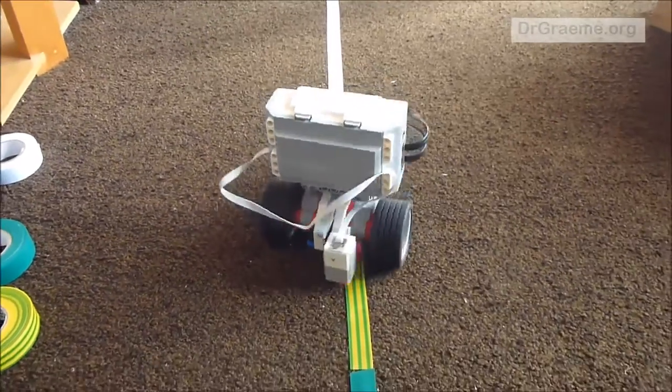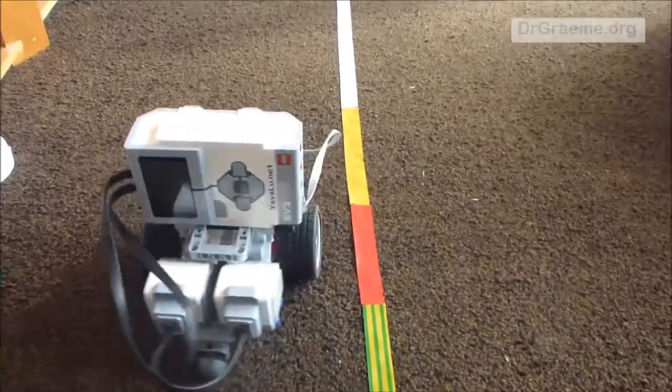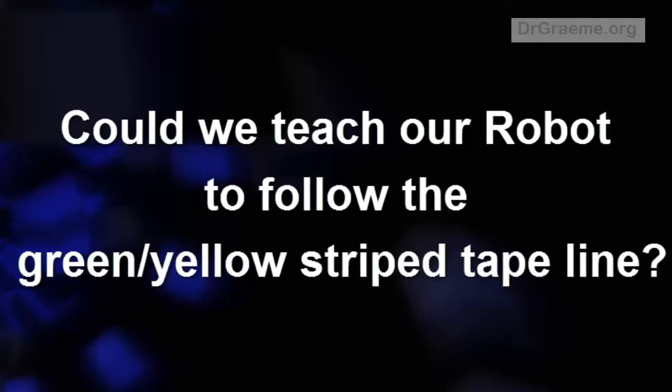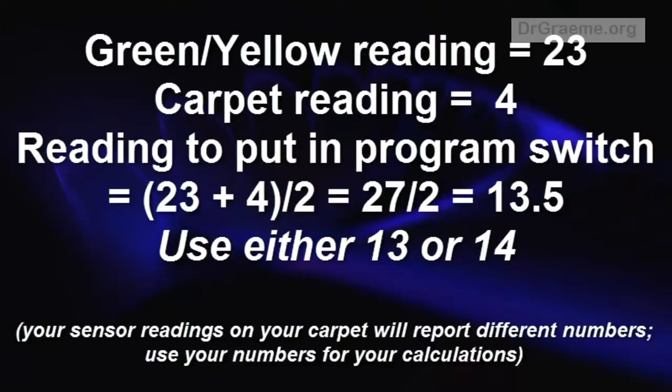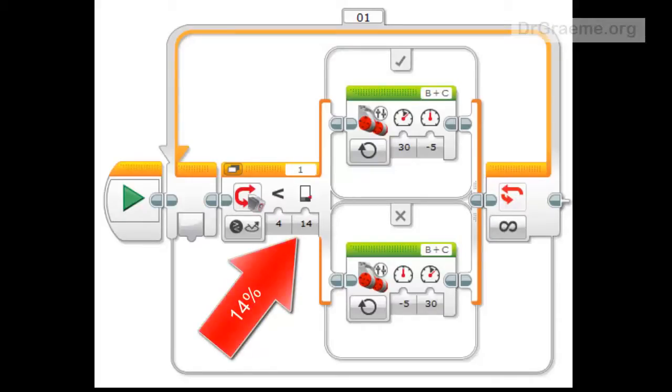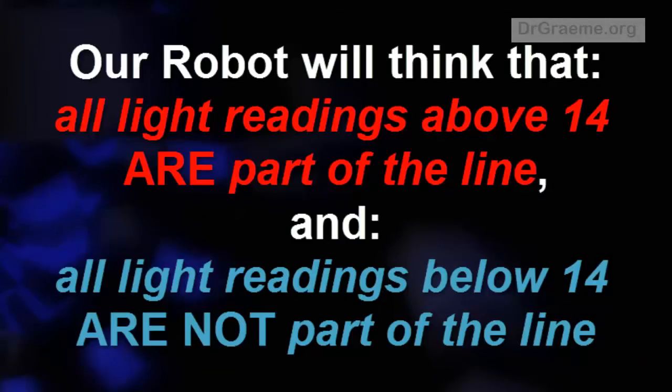But could we get our robot to follow the green and yellow striped tape line? Well, yes we could if we change the switch value. Suppose we get the yellow green reading of 23, the carpet reading of 4, and it will give us a switch value of either 13 or 14. Choose 14, and all light readings above or equal to 14 are part of the line. And all light readings below 14 are not part of the line.